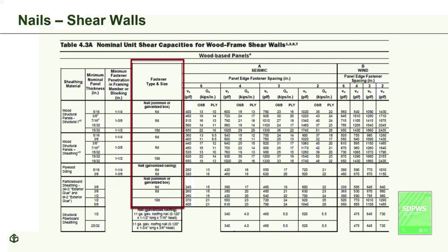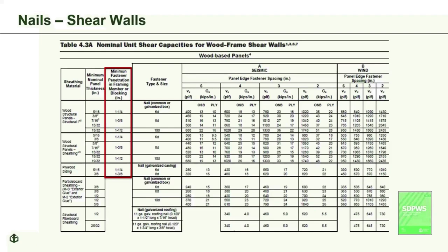SDPWS Table 4.3A for shear wall capacities is based on common or galvanized box nails of various penny weights with specific minimum penetration. Diaphragms allow only common nails, while shear walls allow common or galvanized box nails. Some people are incorrectly specifying other short nails that meet minimum penetration and diameter — but table capacities are only based on common and box nails. This table cannot be used for sinker nails, roof sheathing ring shank nails, or other nails.